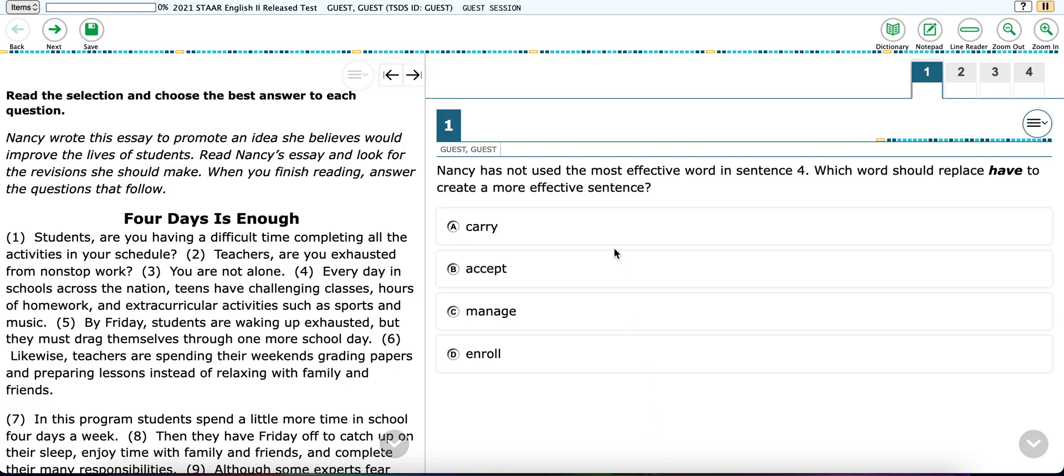First things first, you definitely want to check up here in the bar and make sure that you are in the right test and that your name is showing. So this shows that this is the 2021 Star English 2 release test. You want to make sure that the test that is indicated here matches the test on your ticket and that you're supposed to be taking.